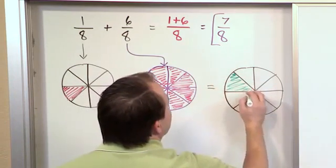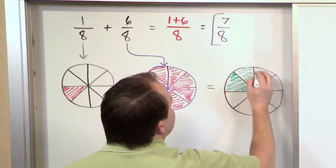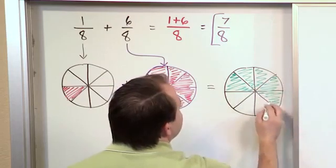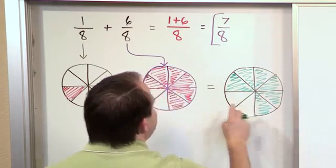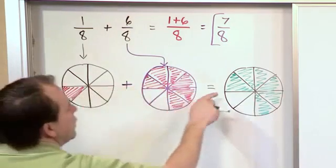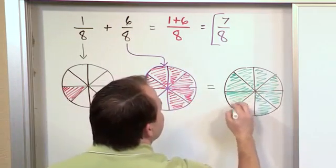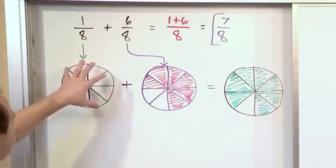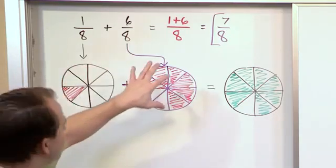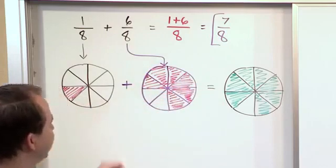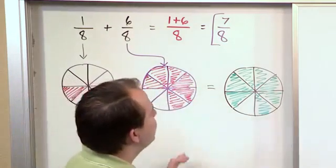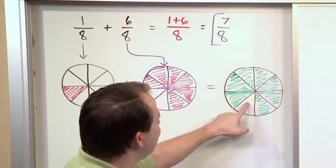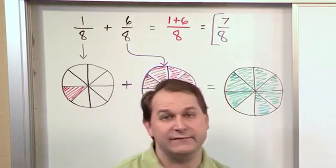So we would have 1, 2, 3, 4, 5, 6, and the 7th piece comes from the one over here. So if we were to try to add these fractions with real pizzas, we would cut one up like this and take one piece, we'd cut one up like this and take 6 pieces, we'd take all the pieces, put them in a separate box and arrange them and we would see that we would have 7 out of 8 pieces. That's why we get the answer of 7/8.